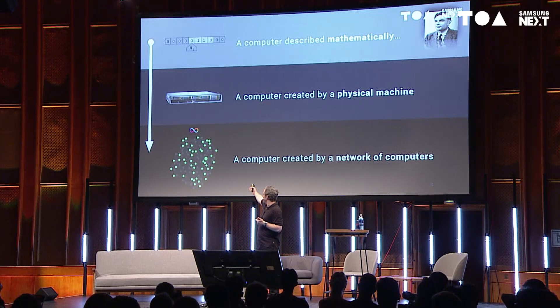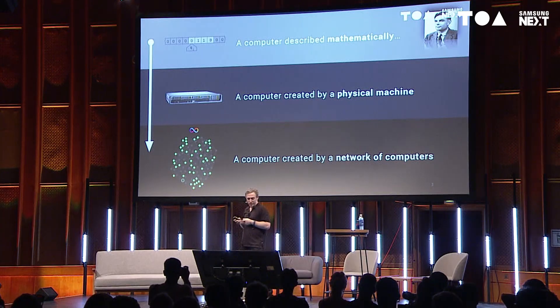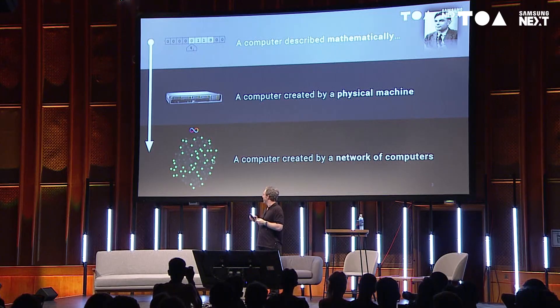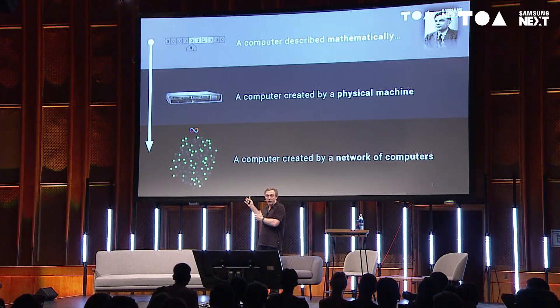What's interesting is that a computer can also be created from a network of computers. And that's what this thing is here. That's actually a recording of the DFINITY network in some small configuration of the DFINITY testnet. You can see that these dots represent different computers that are connected together over the internet to produce one larger computer.